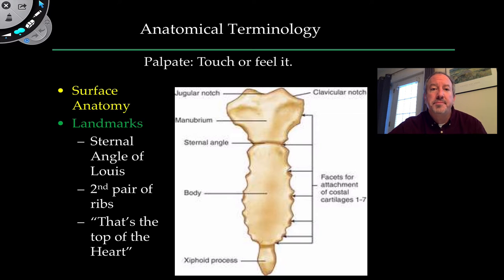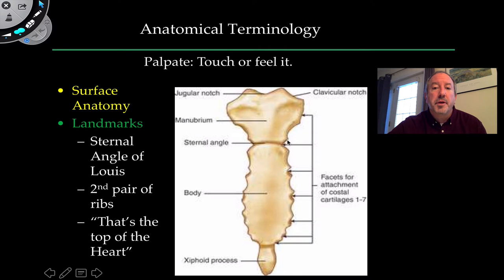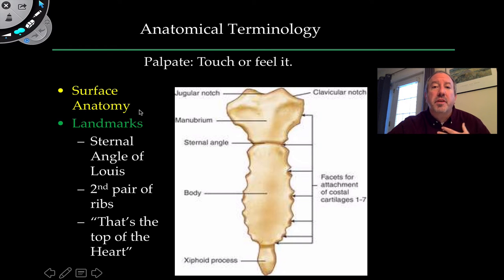The term 'palpate' means to touch. Nurses and physicians use their hands to feel certain structures in a patient's body. When you can feel something easily, it tells you exactly where things are. For example, you might be familiar with the sternum, or breastbone — it's a landmark, and you can study surface anatomy through things you can touch and feel.